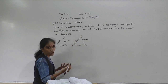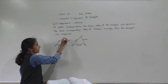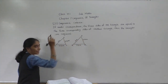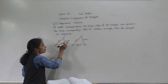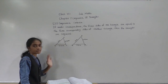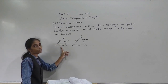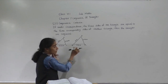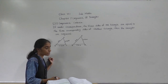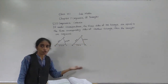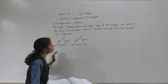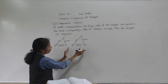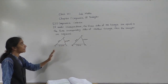These are the three corresponding sides of another triangle. Which are the corresponding sides? AB corresponds to PQ, BC corresponds to QR, and AC corresponds to PR. If you see the measurement of AB and PQ, it is 5 cm — so this side and this side are equal. BC is given as 5.5 cm and QR is also 5.5 cm, so both sides are equal. Then AC is given as 3.4 cm and PR is also 3.4 cm, so these both sides are equal.